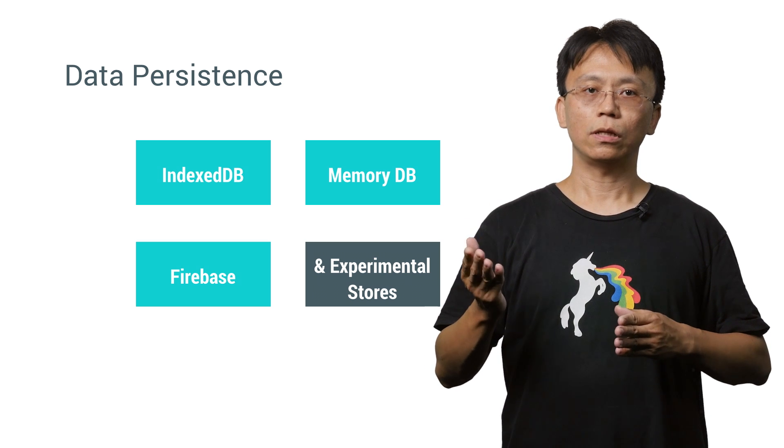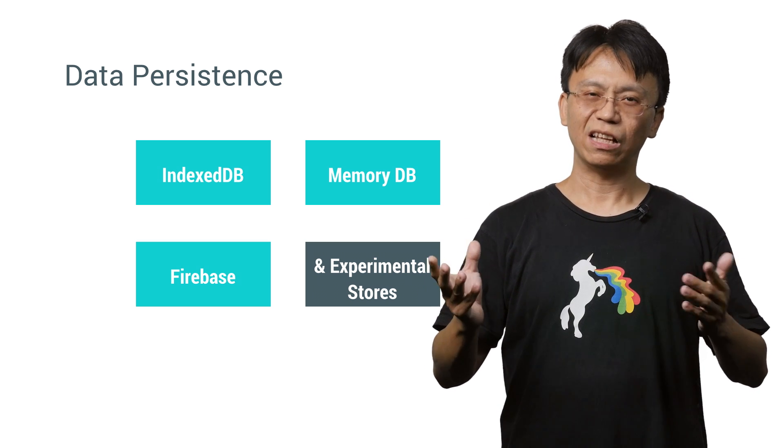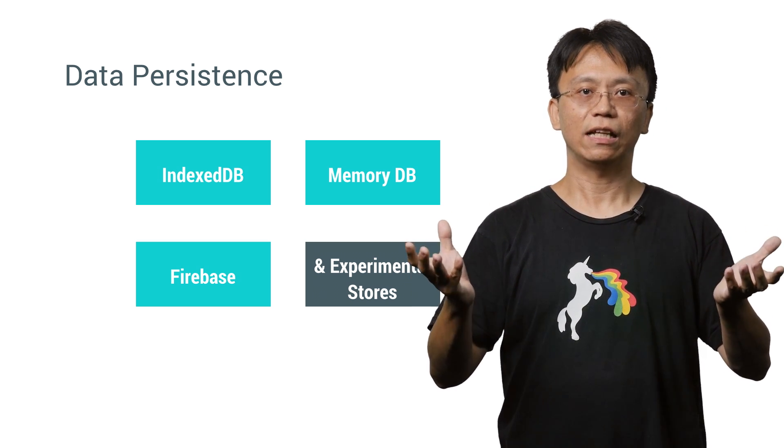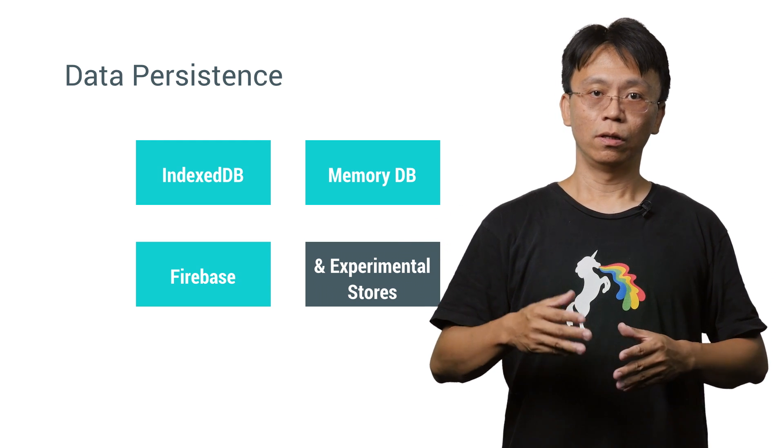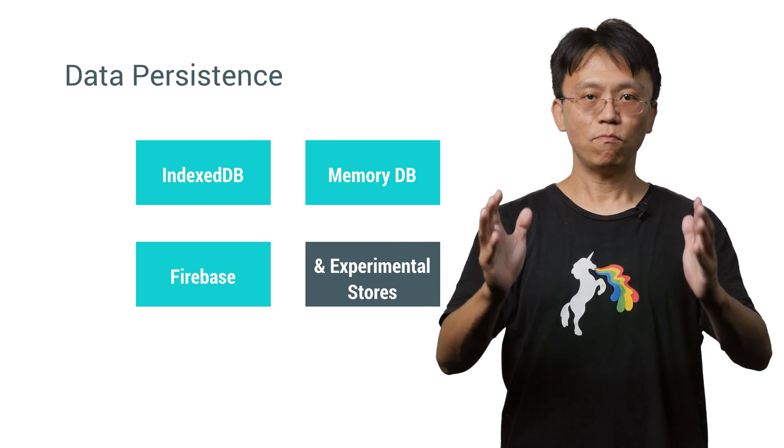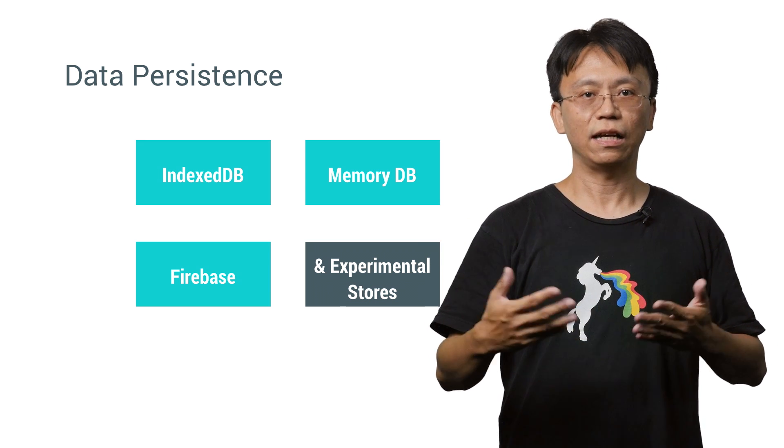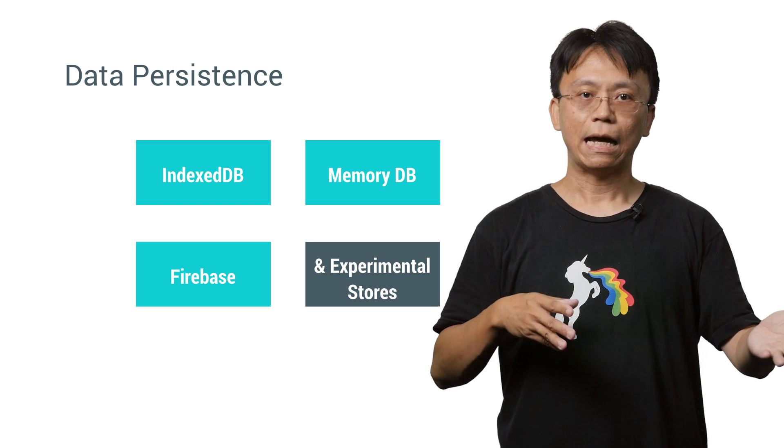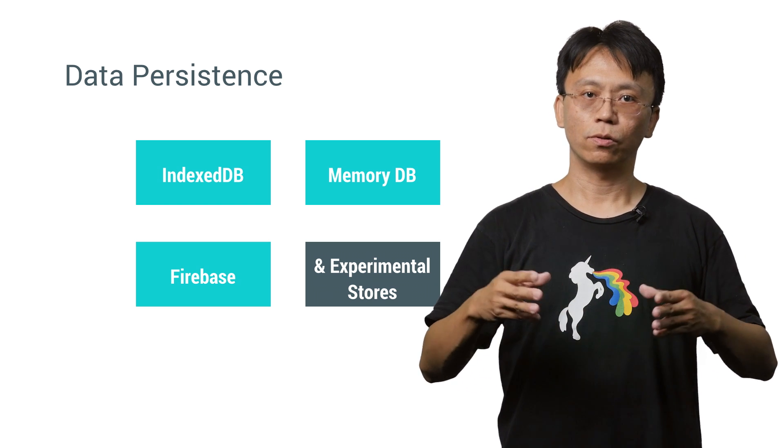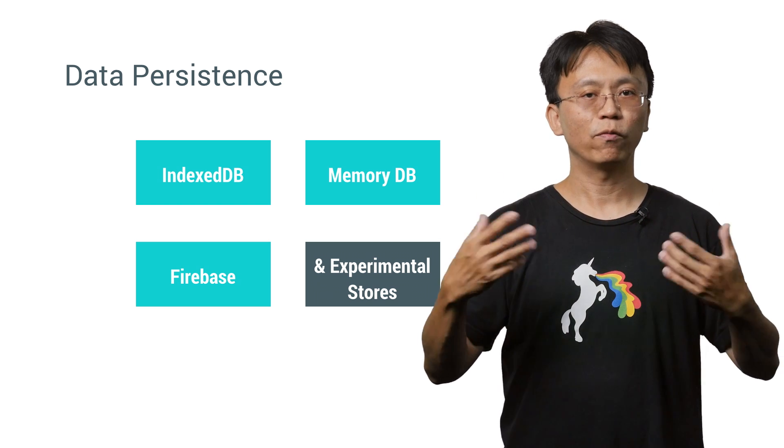If you're only interested in using Lovefield's query engine, but not really wanted to persist sensitive data inside the browser, then MemoryDB is for you. Lovefield can be used as a pure in-memory cache. Data comes from some database sources, say servers in the cloud, and the app uses Lovefield's query engine to store these data in memory and performs queries locally.